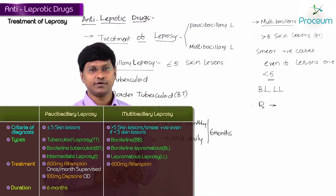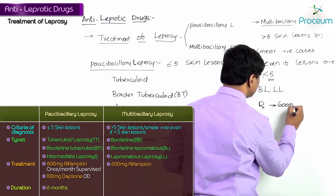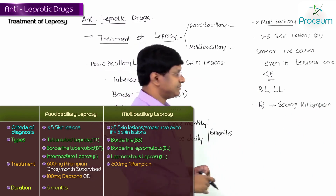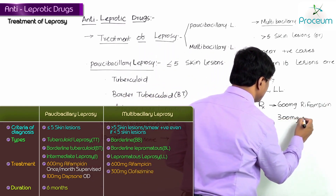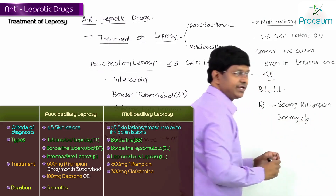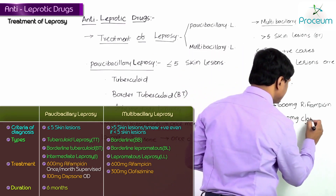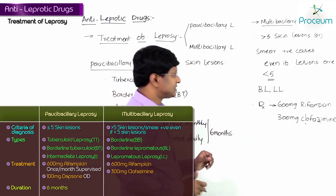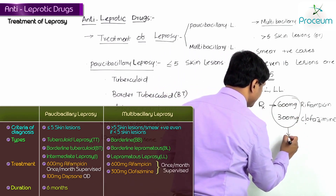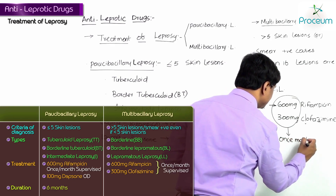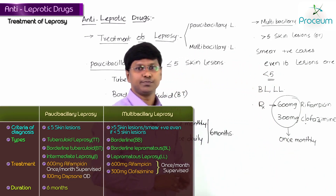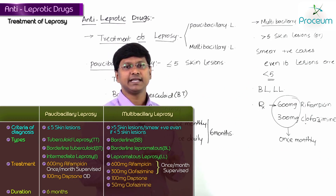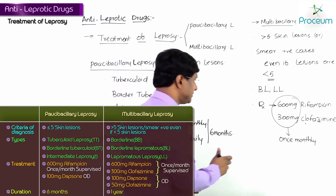For the treatment of multibacillary leprosy, you have to give 600 milligrams of rifampicin and 300 milligrams of clofazimine — these two drugs are given once monthly as a supervised dose. Apart from these, you also add 100 milligrams of dapsone and 50 milligrams of clofazimine once daily.